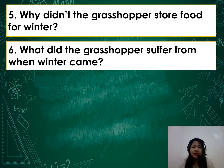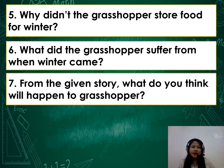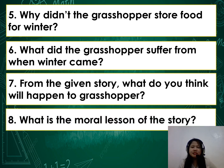Number 7: From the given story, what do you think will happen to the grasshopper? Can you predict what will be the effect of what he did? Can you say or guess the ending of the story? Maybe the grasshopper will die because of starving, or maybe the grasshopper will learn his lesson.